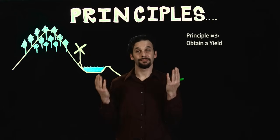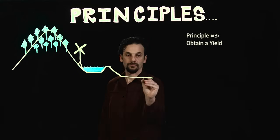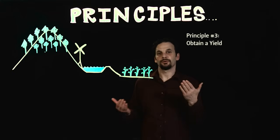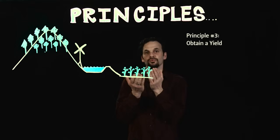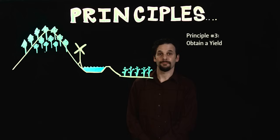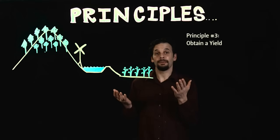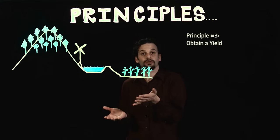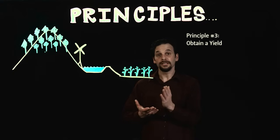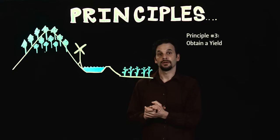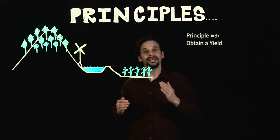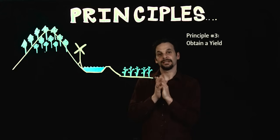This principle gives us the directive to capture and grow surpluses in our system. Principle 3 is Obtain a Yield. This principle promotes self-reliance and gives us the directive to reap a harvest from our permaculture system, because you can't work on an empty stomach. Always choose the tree with greater and more diverse yields over an ornamental plant. Yields can be building materials, fuel wood, or nectar for honey — but plenty of food growing all around you is true security.